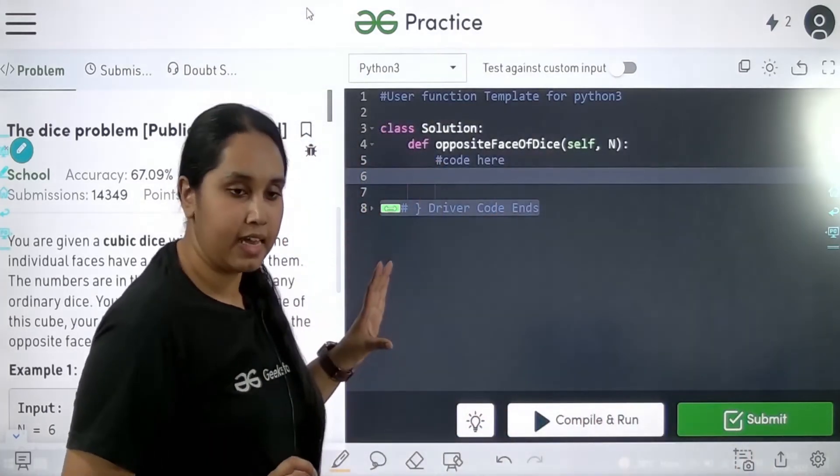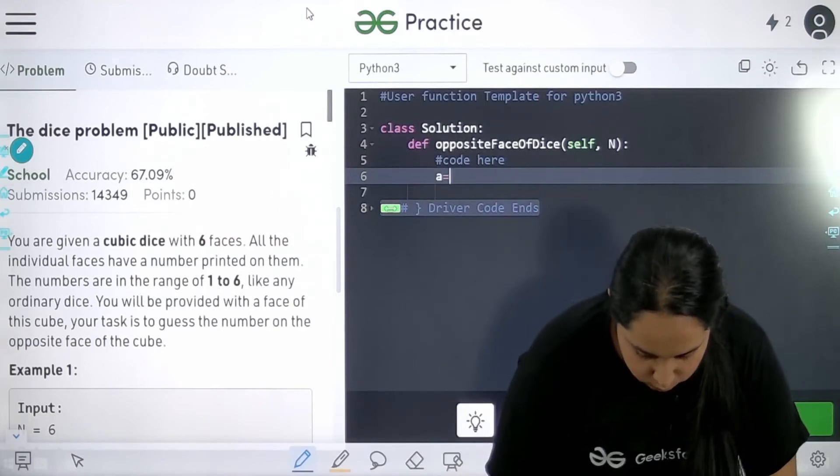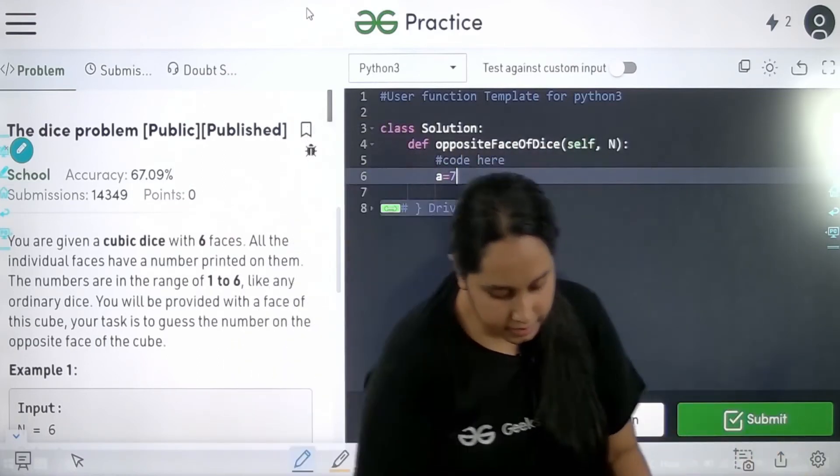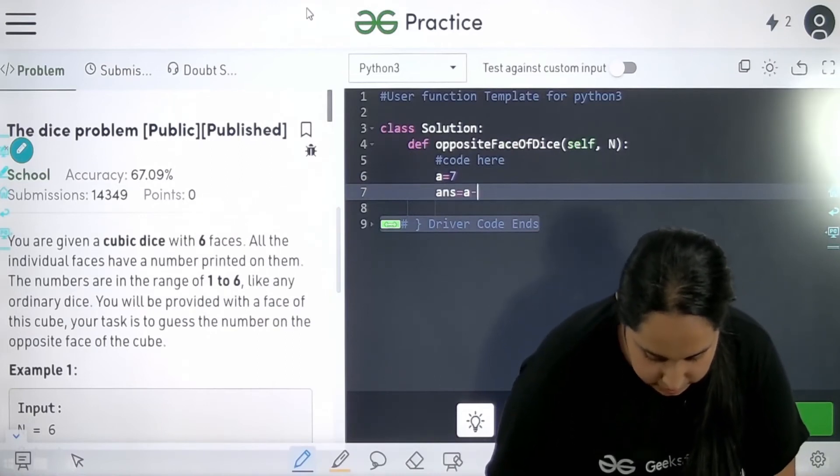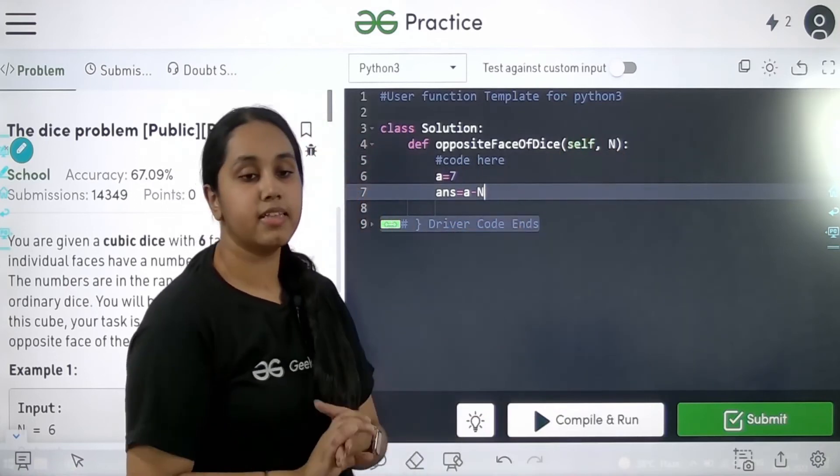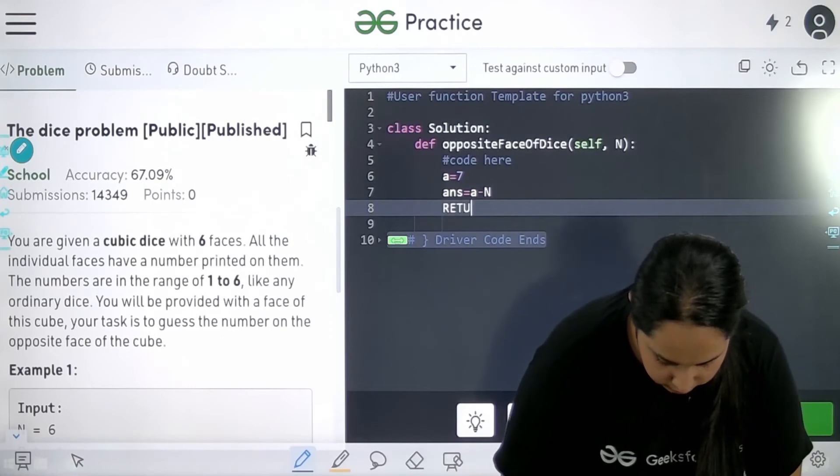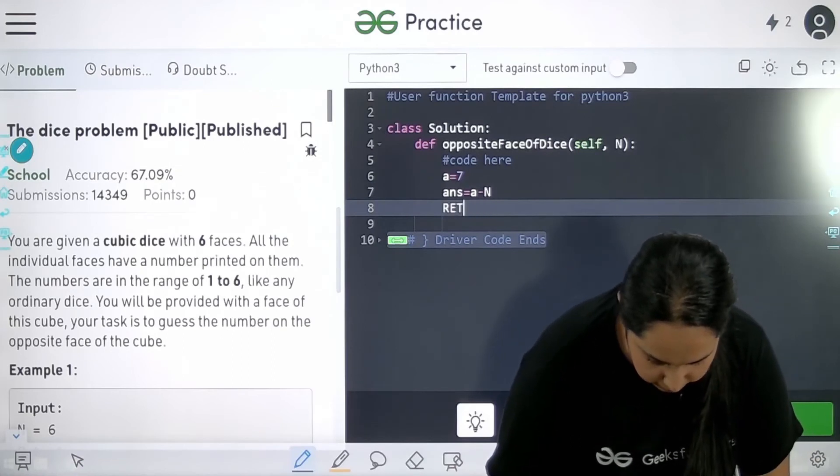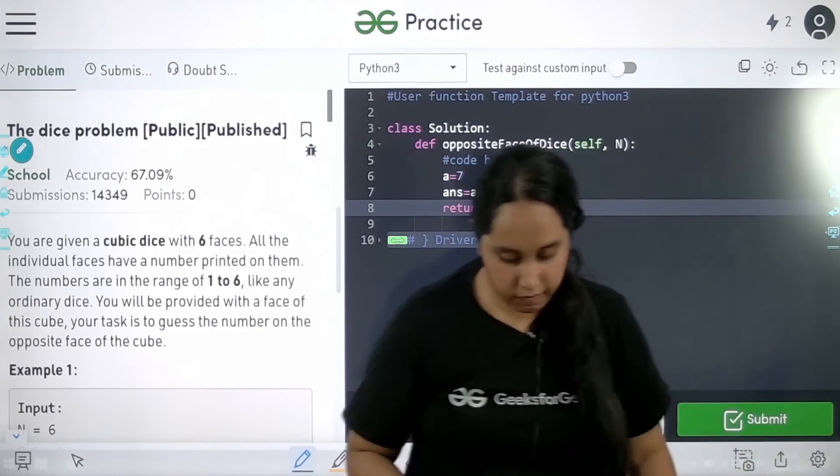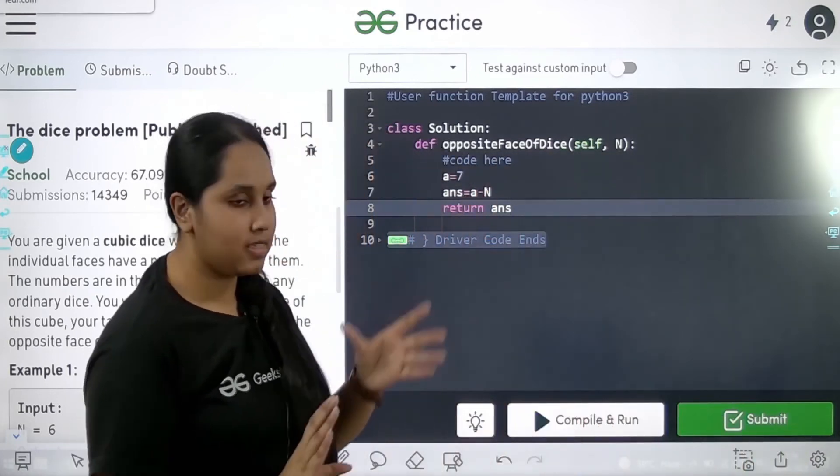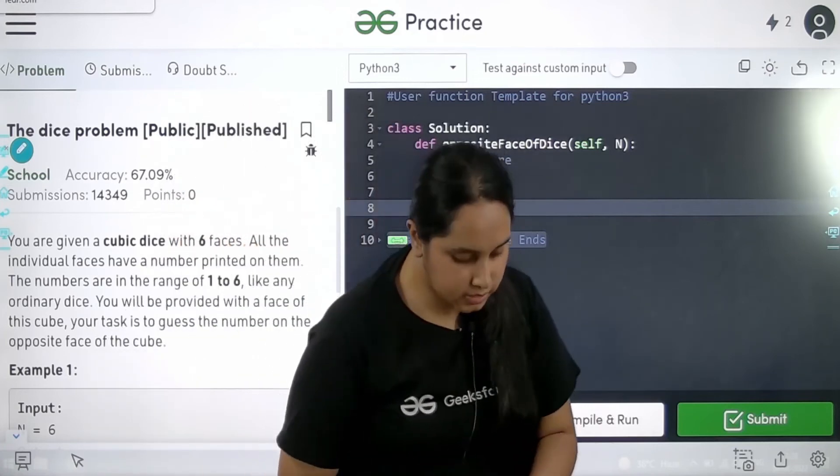So like I mentioned, we would declare a and then we would just use it. So first I am declaring a equal to 7 like I mentioned to you. Then in the next line I would say my answer is a minus the value of n. n is the value of the side that you would be given. Now I just need to return with the value of answer. But to be sure if it is correct or not, first we would compile it and then we would submit it.